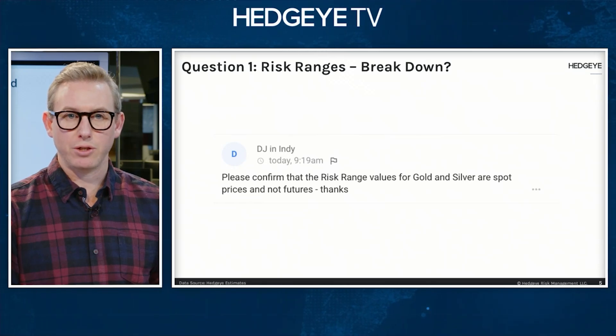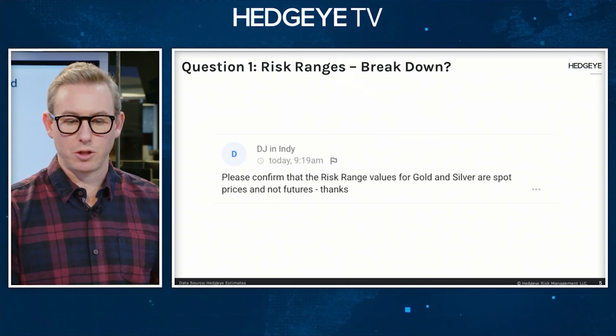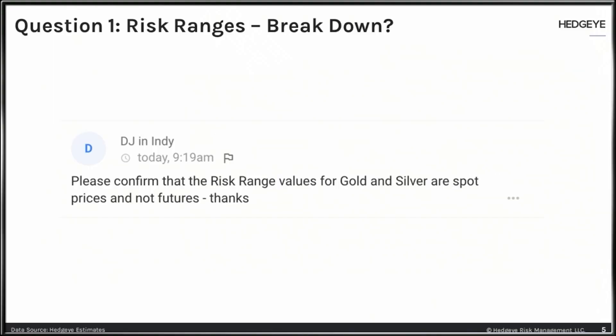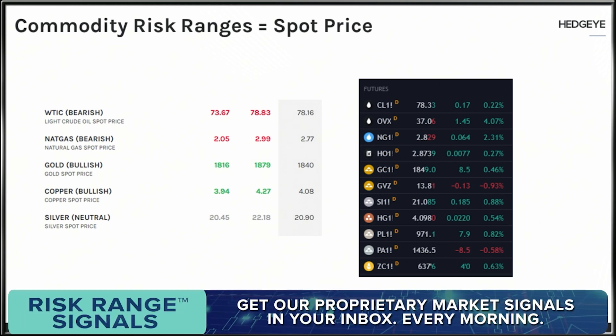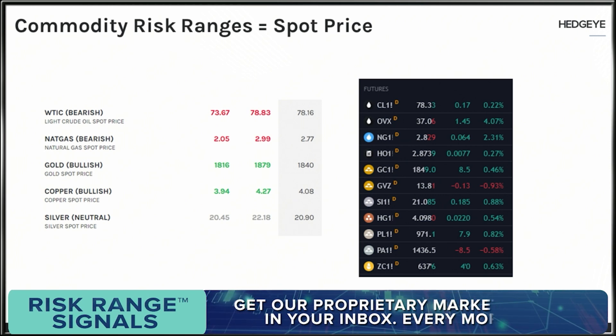Please confirm the risk range values for gold, silver, or spot prices. Going to slide six — I pulled the risk range on the left, so that's the commodity risk ranges from today's risk range product. You'll see right underneath there it says WTIC bearish trend, light crude oil spot price — so those are all spot prices, you are correct.